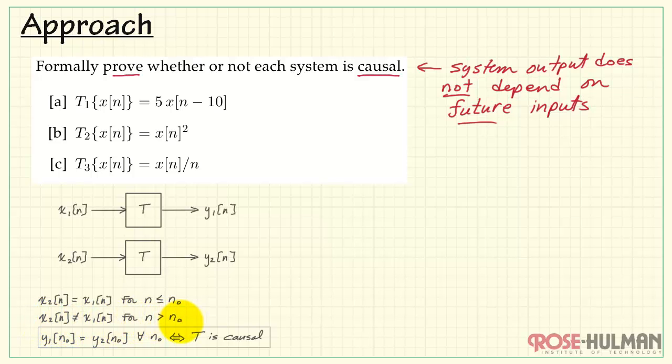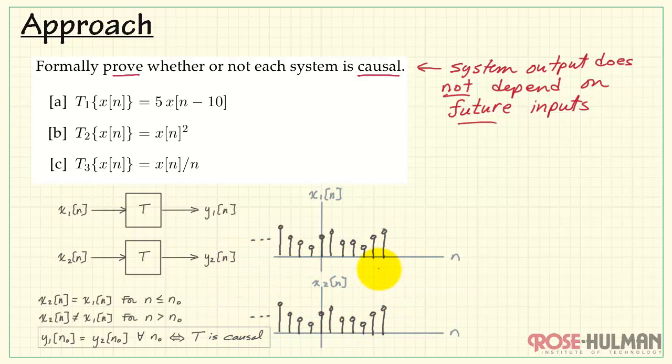x1 and x2 are the same up to a certain time n0 and then are different after that. We can picture it like this. Say we have a signal x1 and x2, which are the same from minus infinity up to the time n equals n0.